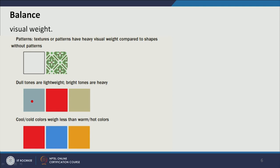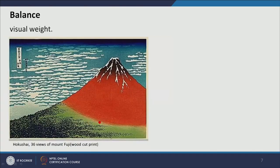In this diagram we have two dull tones on both sides of a bright red tone, so the red tone definitely comes out as a focal point and has heavy visual weight. For color temperature: red is a warm color, yellow is also warm but not as warm as red, and blue is a cool color. Cool colors have less visual weight and warm colors have more visual weight — so red is heaviest, then yellow, then blue.